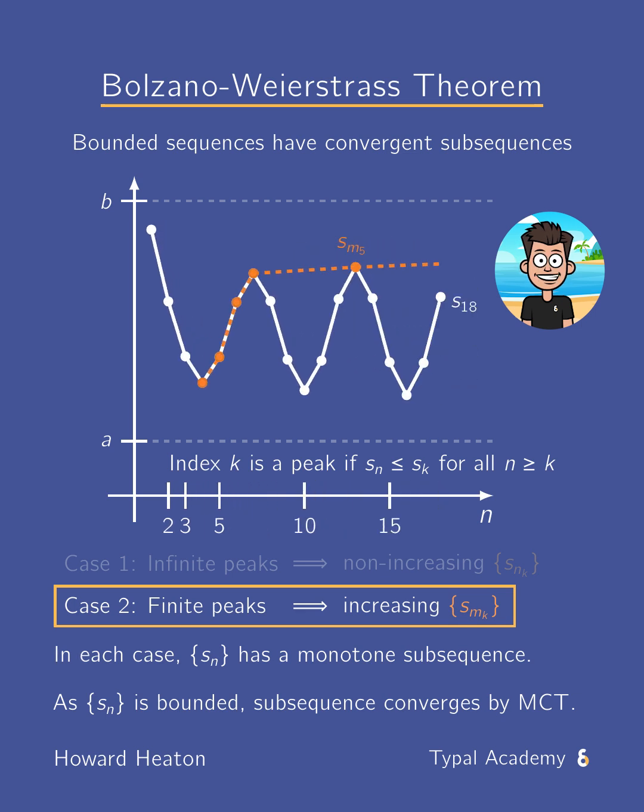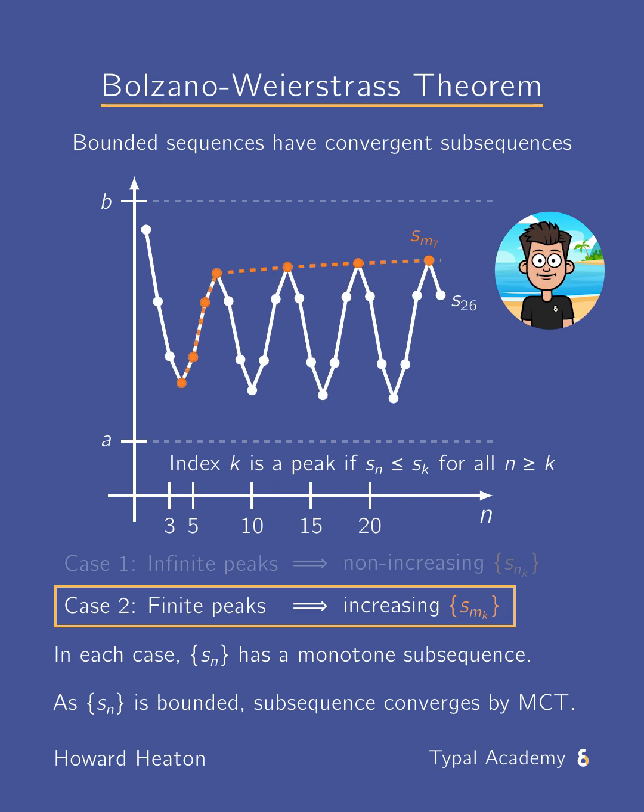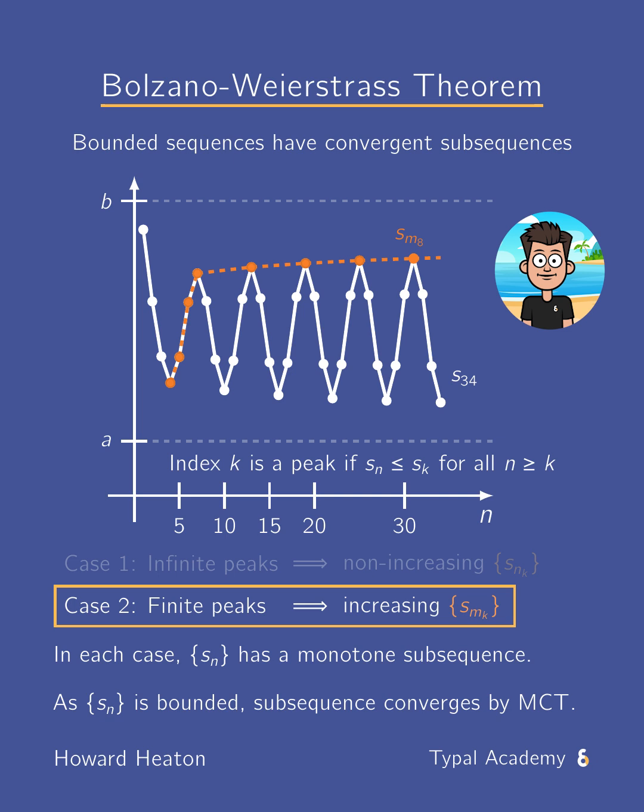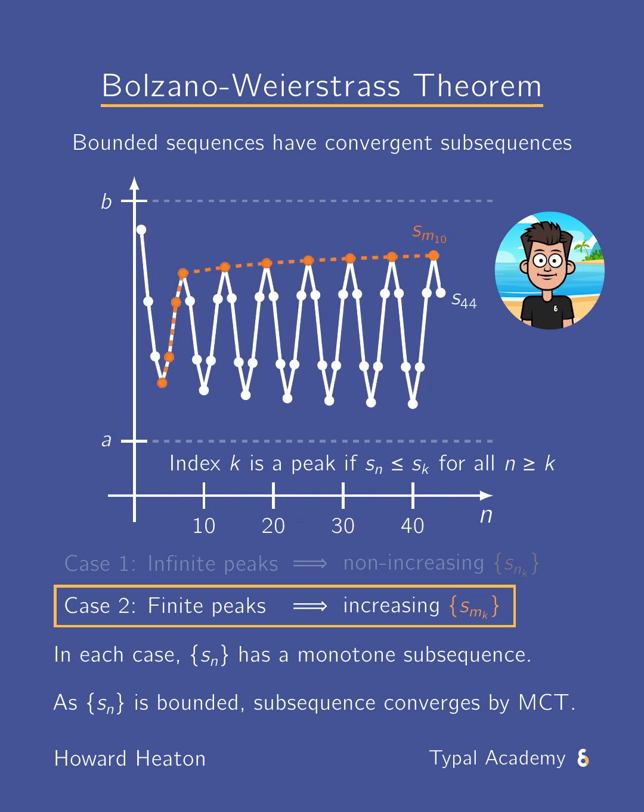In either case, we are able to construct a monotone subsequence. And because these subsequences are in the interval a, b, they are bounded. Hence, by the monotone convergence theorem, the subsequence converges. And that completes the proof of the theorem.